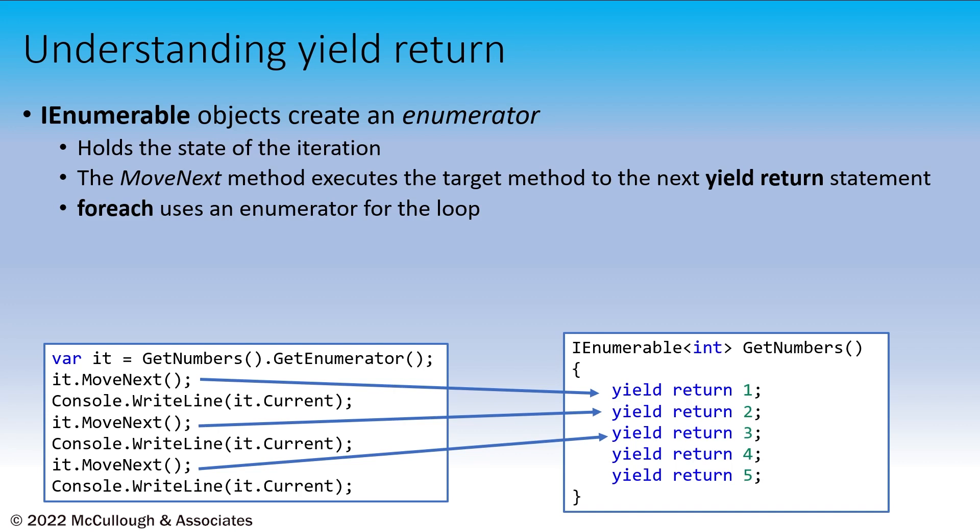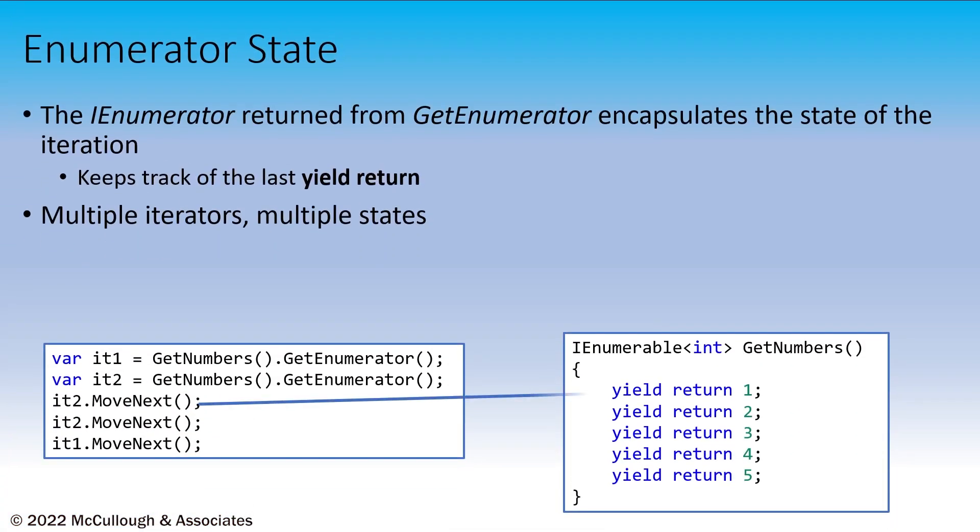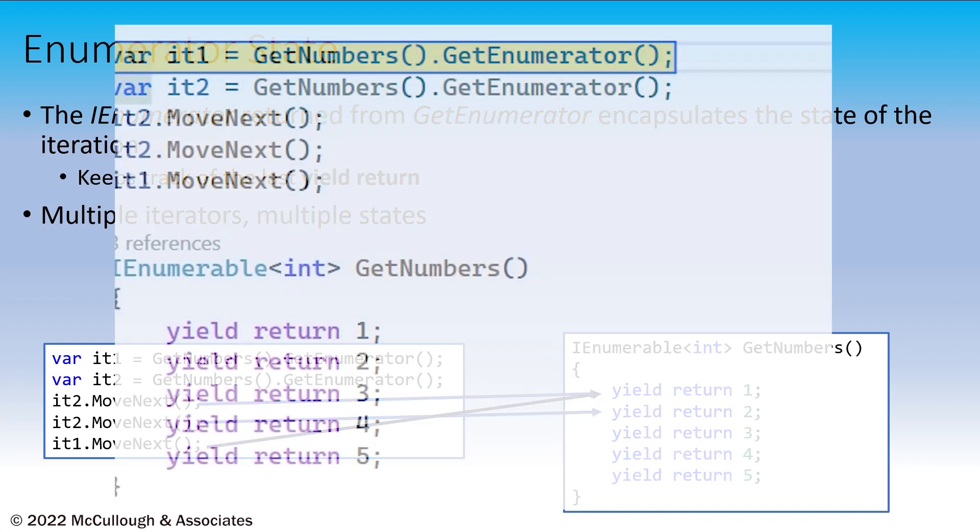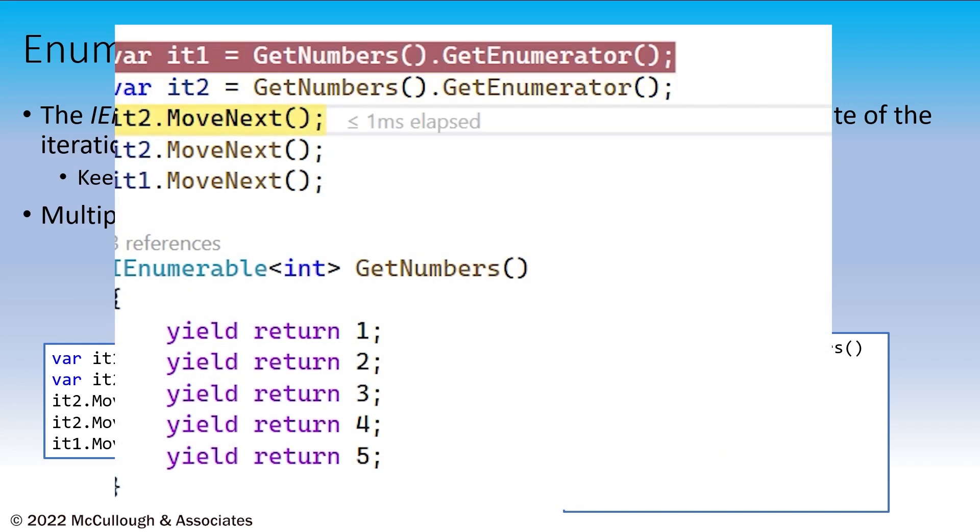Foreach loops do that internally, but that's really what's happening is MoveNext. The enumerator or iterator object contains the state. It's a state machine. It contains the location in the method where it left off. So if we have multiple enumerators, each will track its own progression through the yields. As you can see here, I've got it1 and it2. They're each keeping up with their own location. As we call MoveNext, they also advance, but that's internal to the iterator.